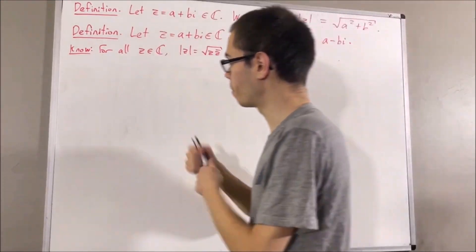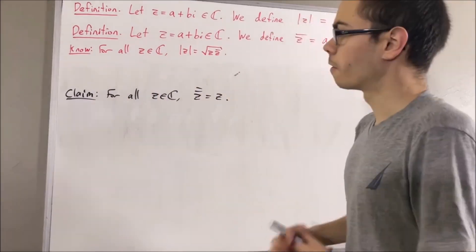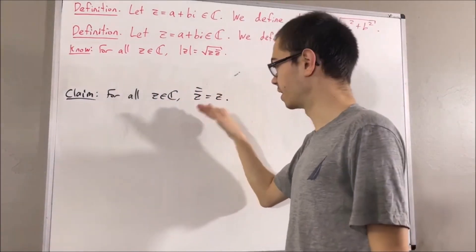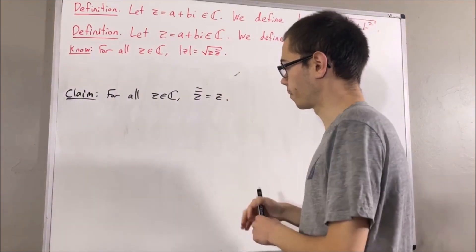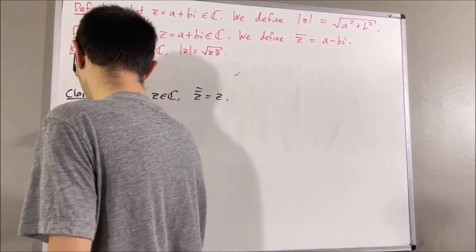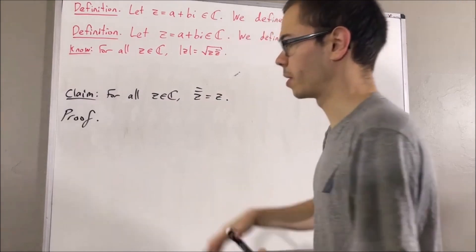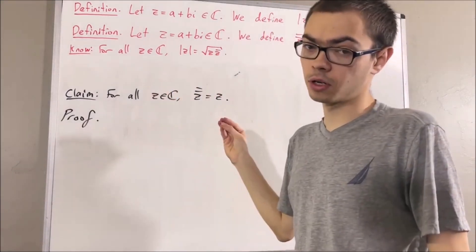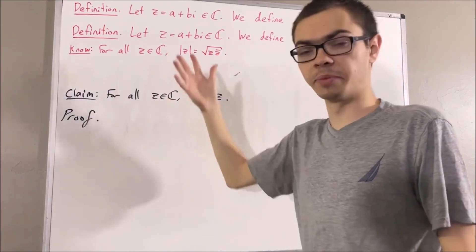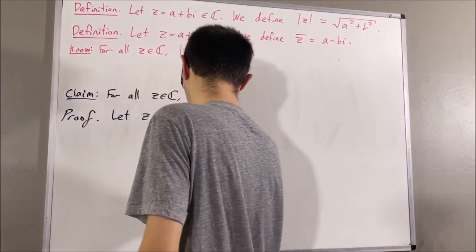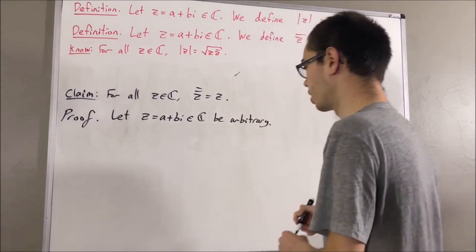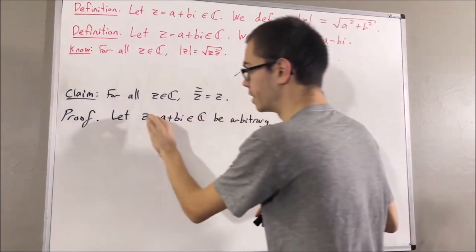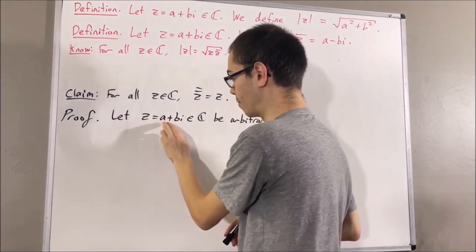Here's the next claim we're going to prove. For all complex numbers z, the conjugate of the conjugate of z is equal to z. Since we're trying to prove a statement about every complex number, let's give ourselves an arbitrary complex number z equals a plus bi.